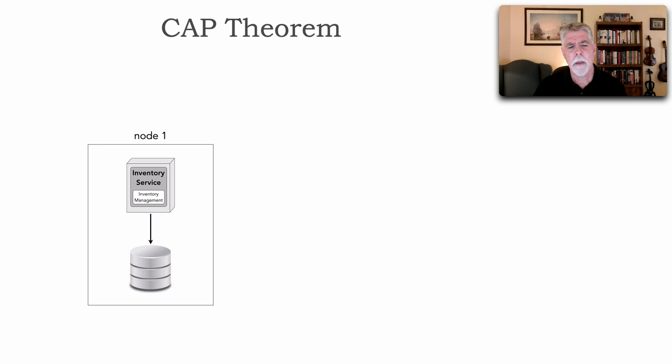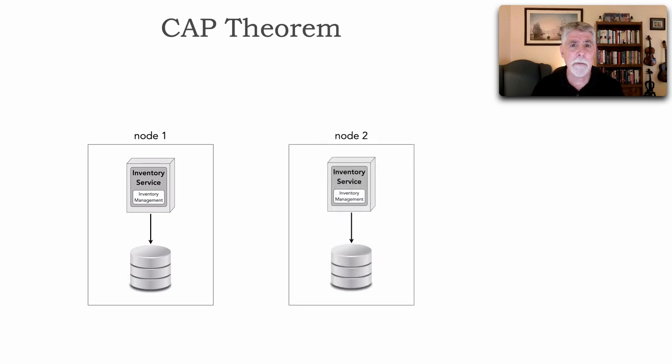Let's talk first about a topology. Here's a particular node, and we have inventory service, which does its updates to a database. Node two has the same topology, where we have the inventory service and updating data. This data is kept in sync through bi-directional database replication, creating that consistency. We also have a client that can go through some sort of network switch or load balancer to either of these nodes to get or update inventory.